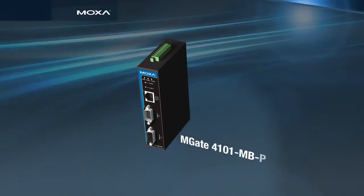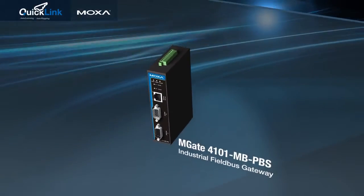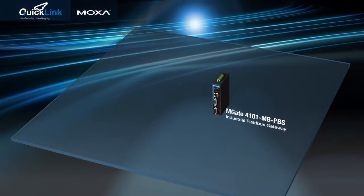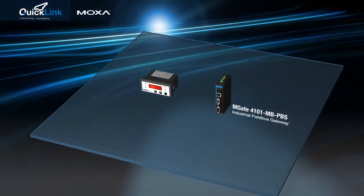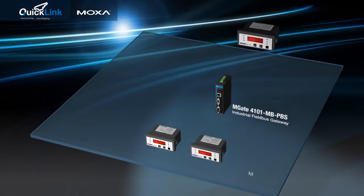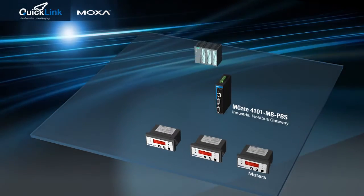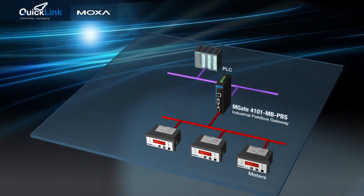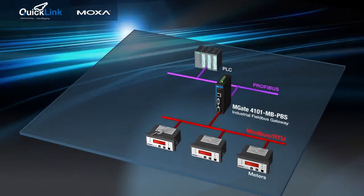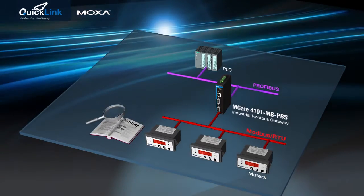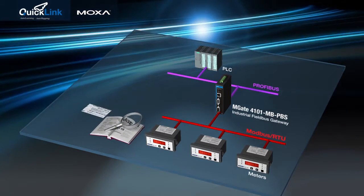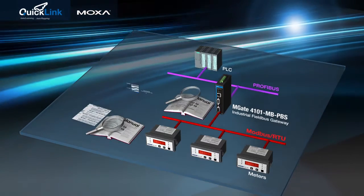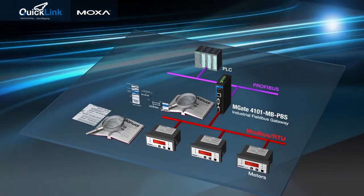We would like to demonstrate how easily QuickLink can configure a gateway. We will use Moxa's MGate 4101 MDPBS industrial gateway to connect and transfer data between a Modbus RTU-based meter and a Siemens Profibus PLC. Conventional gateway configuration requires you to first study both the meter manual and the gateway manual to know how to properly input the Modbus command and define I/O mapping information between Modbus and Profibus.